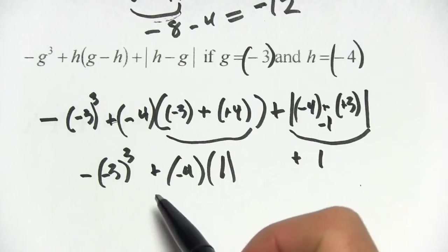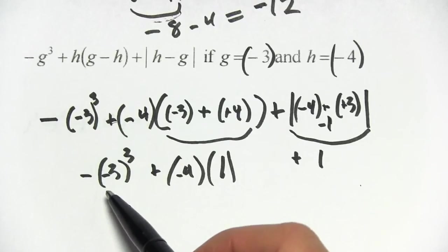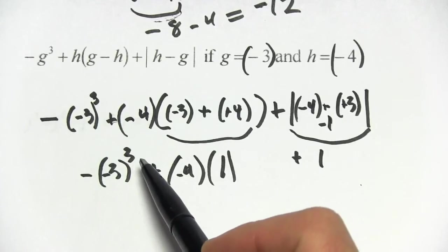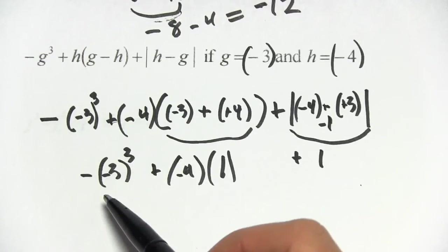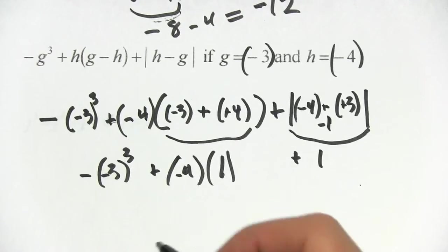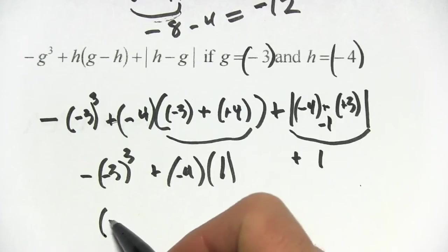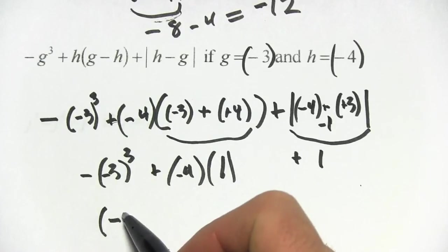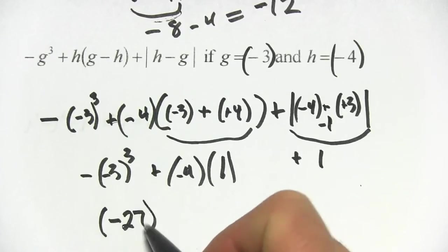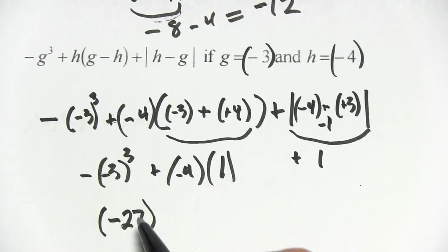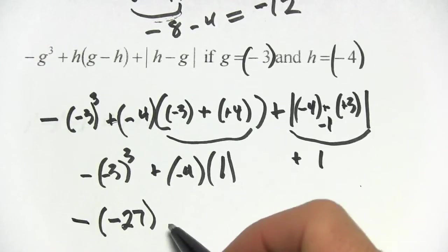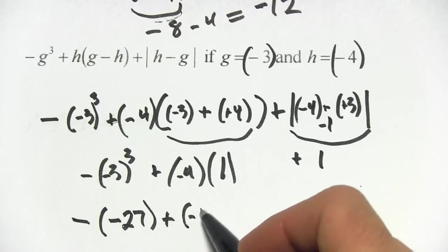Well when you raise a negative number to an odd power like 1 or 3 or 5, the result stays negative. So inside these parentheses we're going to have a negative number, and 3 times 3 times 3 is 27. So negative 3 cubed is negative 27. We have this negative sign still hanging out here, and we have a plus sign, and then we have negative 4 times 1, and then don't forget this plus 1 straggling over here.